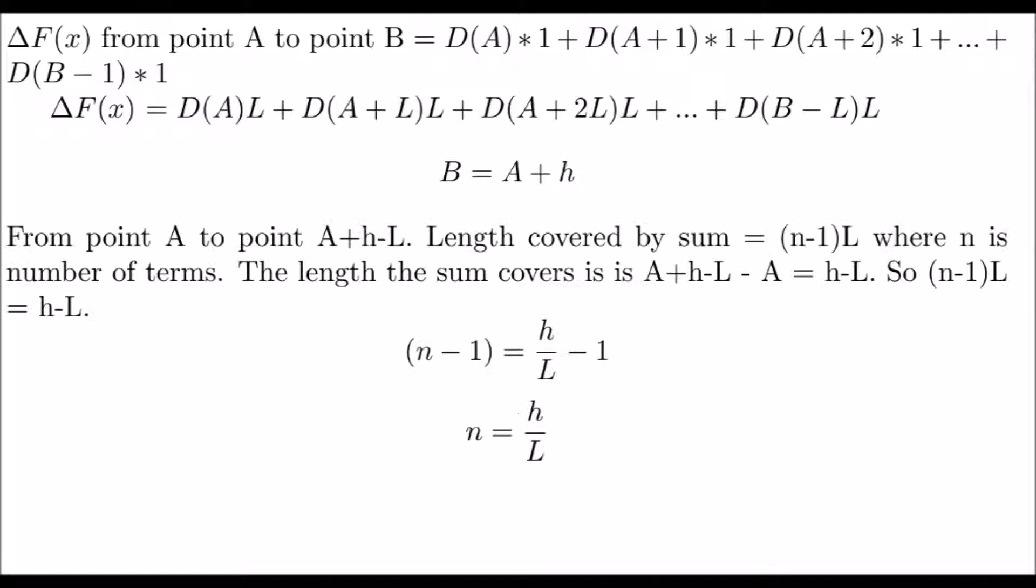Every term covers the length of l, so the total length covered is the number of terms, n minus 1, multiplied by l. The minus 1 is because we count n equals 1 at point a, which covers no distance, not at point a itself.